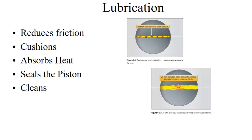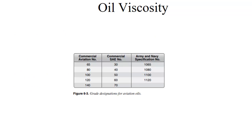Modern oils have detergents in them that keep everything nice and clean. We also use oil as a hydraulic fluid to control propellers and waste gates and things like that. It makes a handy source of warm hydraulic fluid.